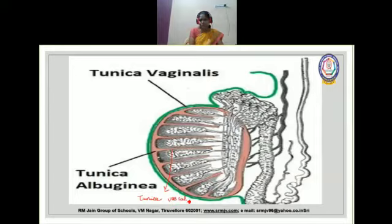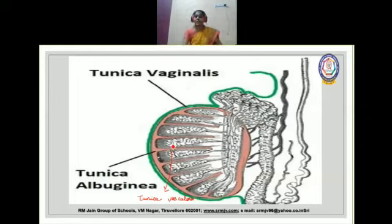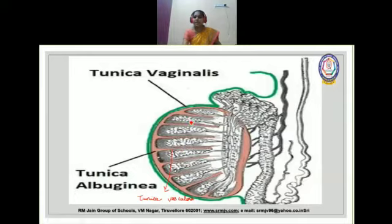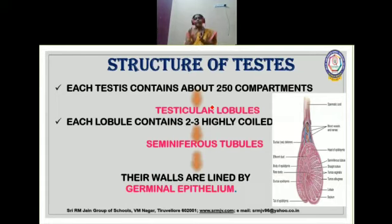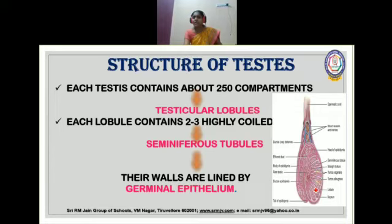In this structure you can see the three layers of the testis. The outermost green-colored layer is the tunica vaginalis. Next is the fibrous layer, tunica albuginea. Tunica vasculosa, the innermost layer made of blood capillaries, is not separately shown, but each compartment of the testis is called a testicular lobule, and each lobule is lined by the tunica vasculosa.